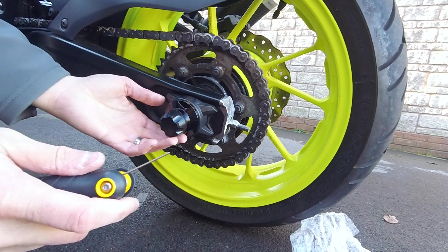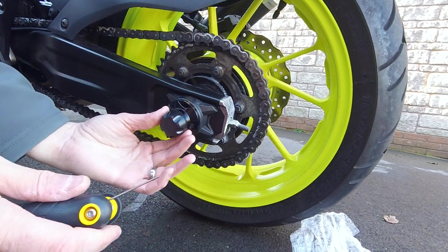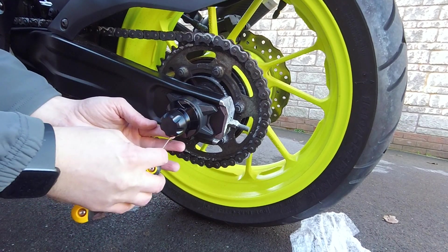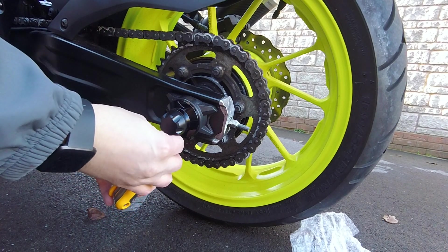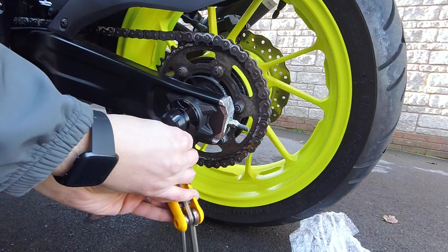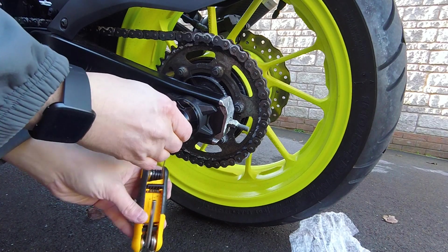And then you get your 1.5mm allen key, locate your grub screw, and then tighten up the grub screw. And then you're done—it is really that easy.